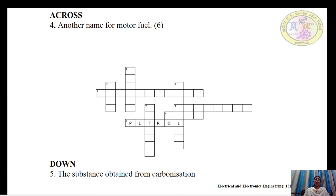Now the down crosswords. The fifth down word is a four-letter word: a substance obtained from carbonization, formed by the carbonization of dead vegetation. This substance is used in thermal power stations as a solid fuel. It is nothing but coal.